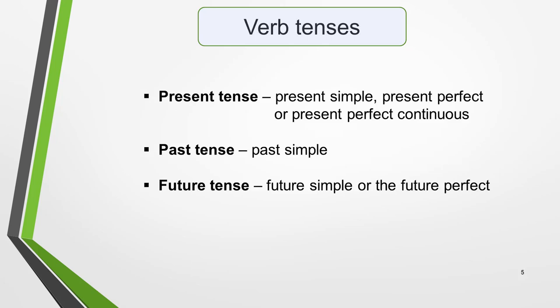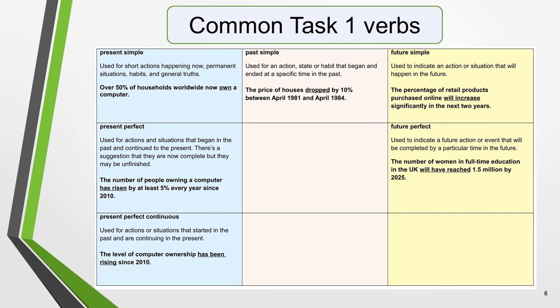The tenses you're most likely to need are, for the present tense, the present simple, the present perfect, or the present perfect continuous. For the past tense, especially the past simple, and for the future tense, future simple or future perfect. This table gives explanations of these verb tenses and example sentences from Task 1 essays. Pause the video and read through it.